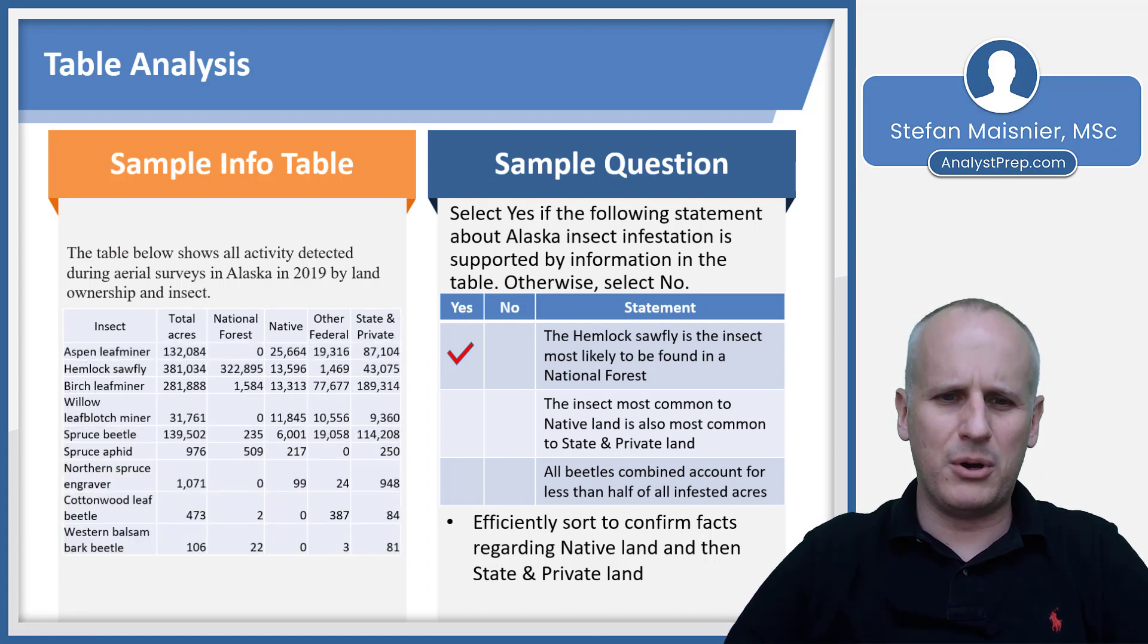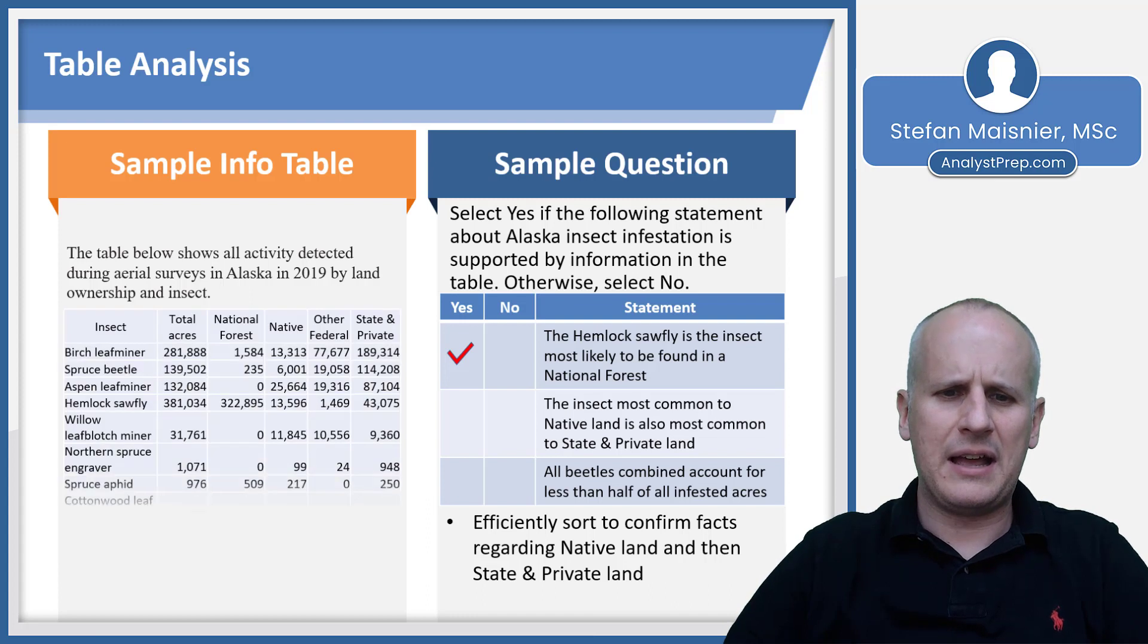And if we efficiently sort about the facts regarding native and private land, we've now sorted by the most for native land. And we can sort for the most by private land. And we see that we actually change the 25,664 that was the top of the native is not the top when we sort by state and private. So we see that the birch leaf miner is most common to the state and private land, whereas the aspen leaf miner is most common to native land.